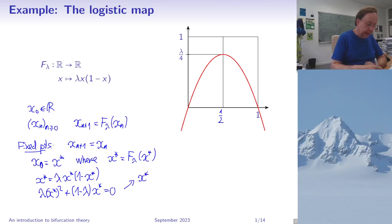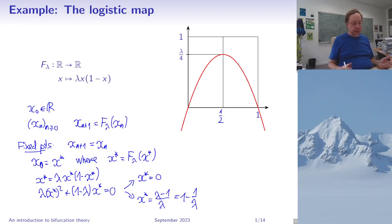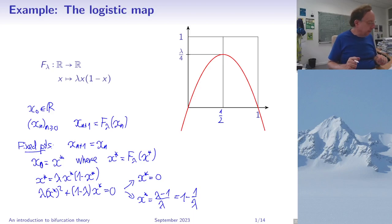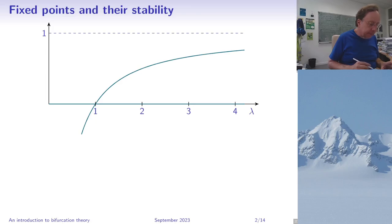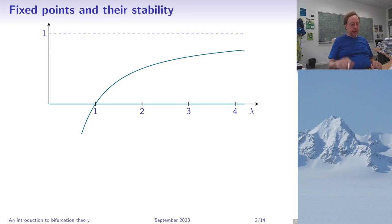One solution is x* = 0, and the other is x* = (λ−1)/λ, which I can also write as 1 − 1/λ. So these are two so-called equilibrium branches: for every λ we have these two different fixed points, which coincide when λ = 1. Here is a plot of these fixed points in terms of λ — one of them is the axis and the other is this curve with a horizontal asymptote at 1.